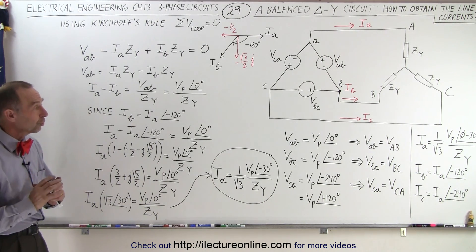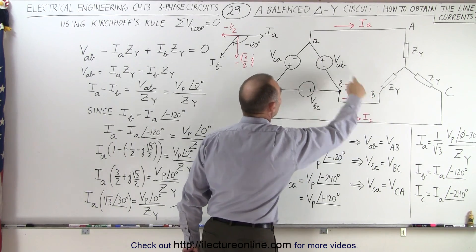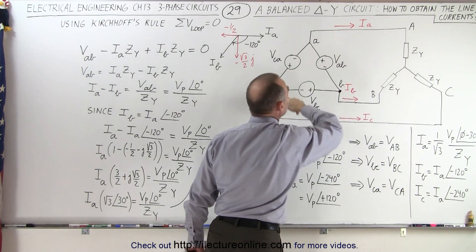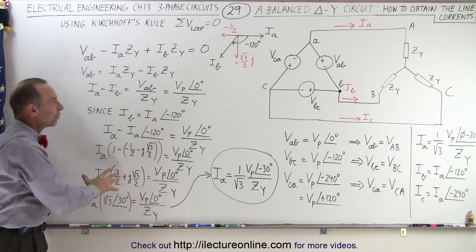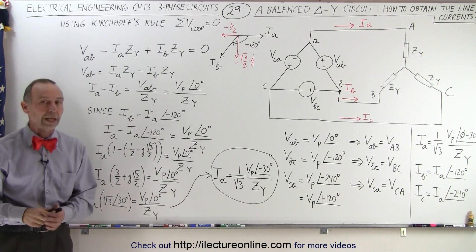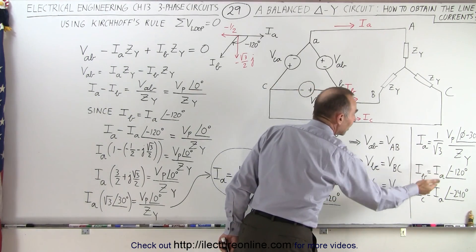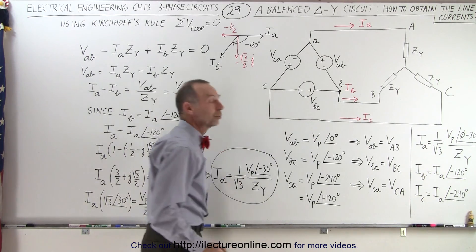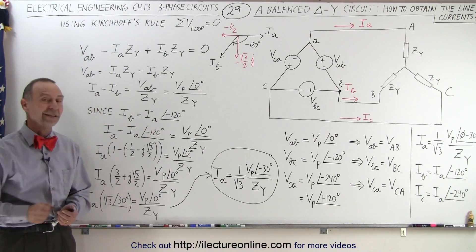Of course, what we could also do is sum up the voltages around this loop and sum up the voltages around that loop, and if we do that, you can see that you get the very same result by going through the same process to find the other two line currents, or simply take the first line current and then find the next two line currents by subtracting 120 degrees. Either way, you'll get the same result. And that is how it's done.